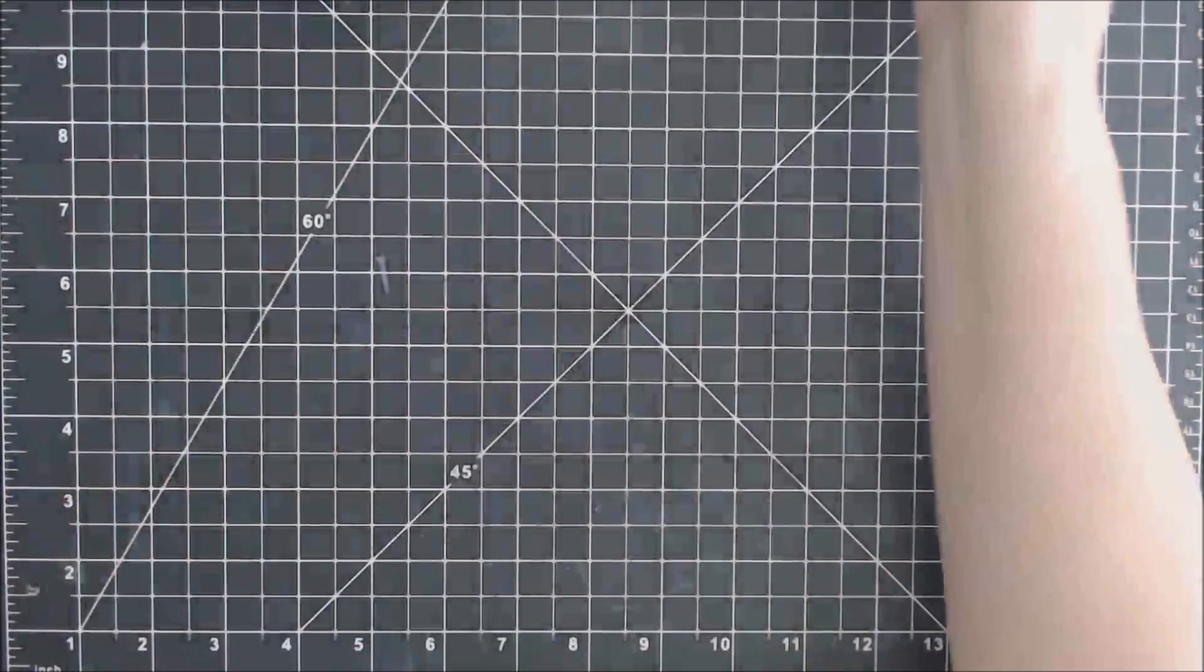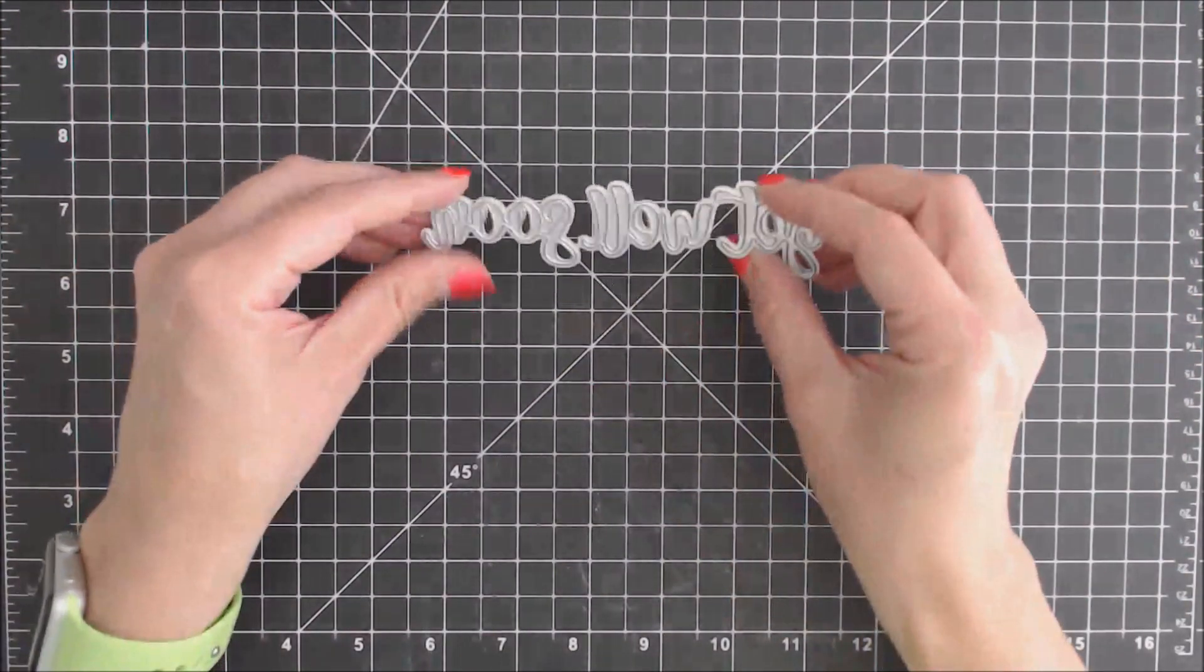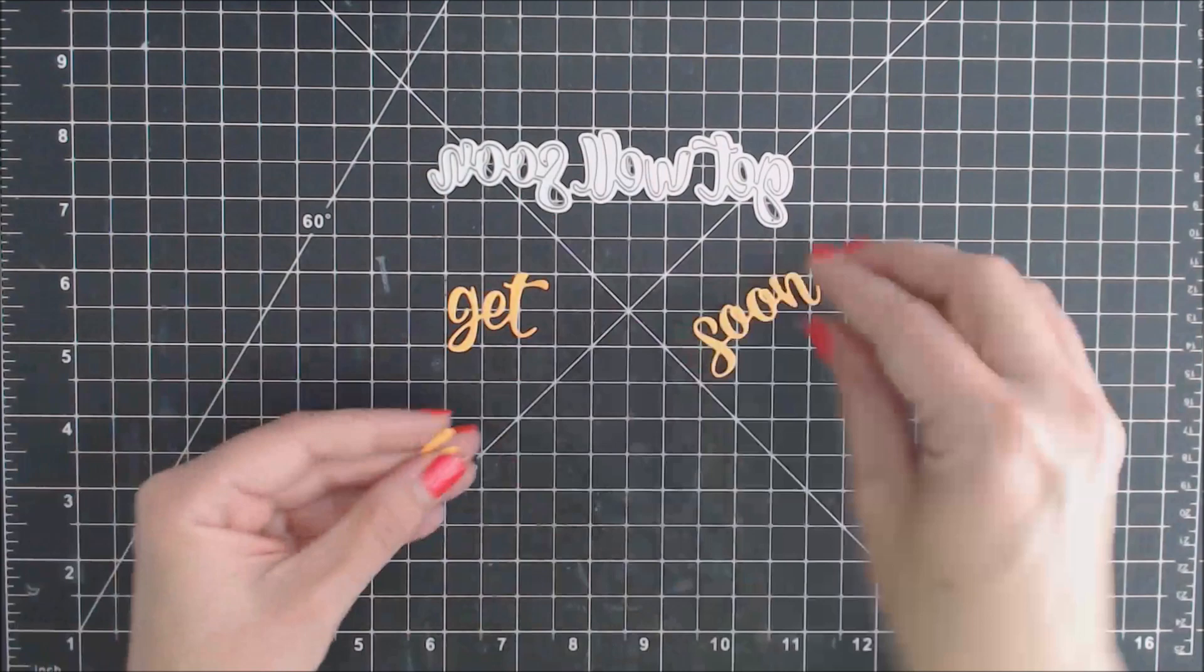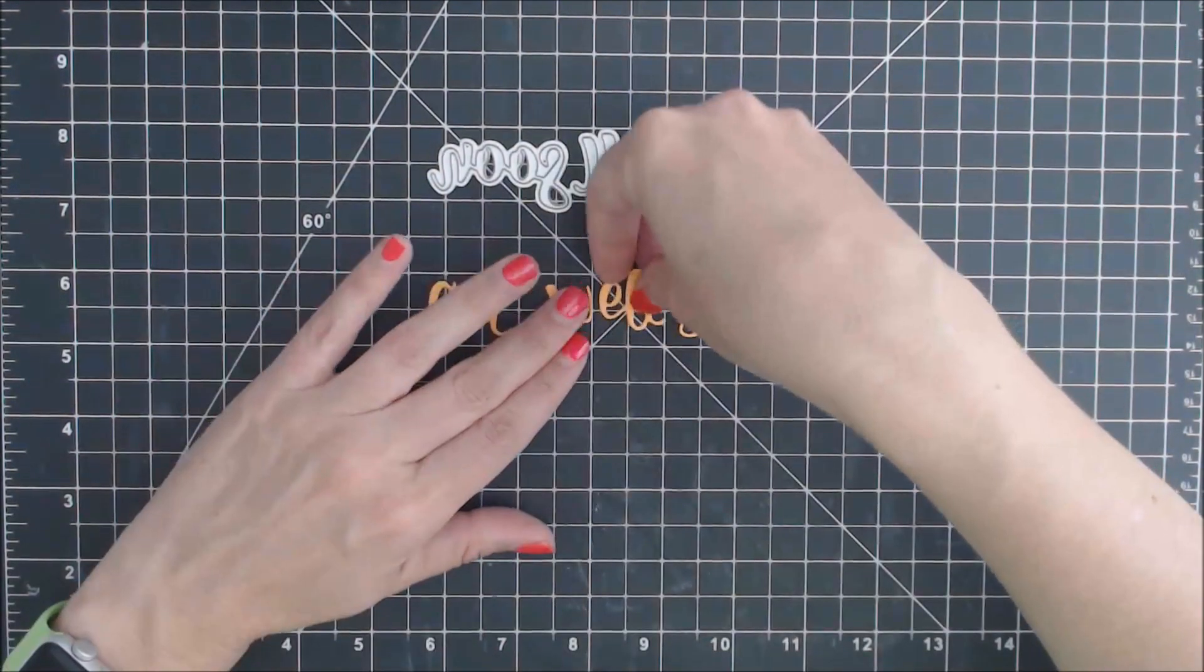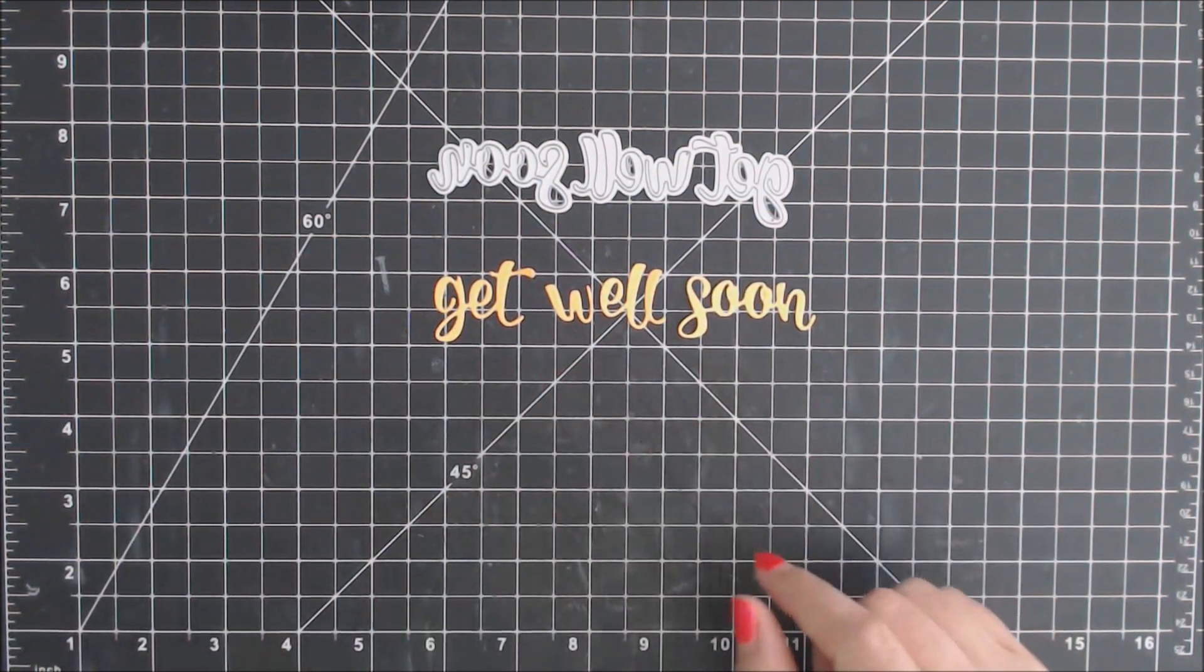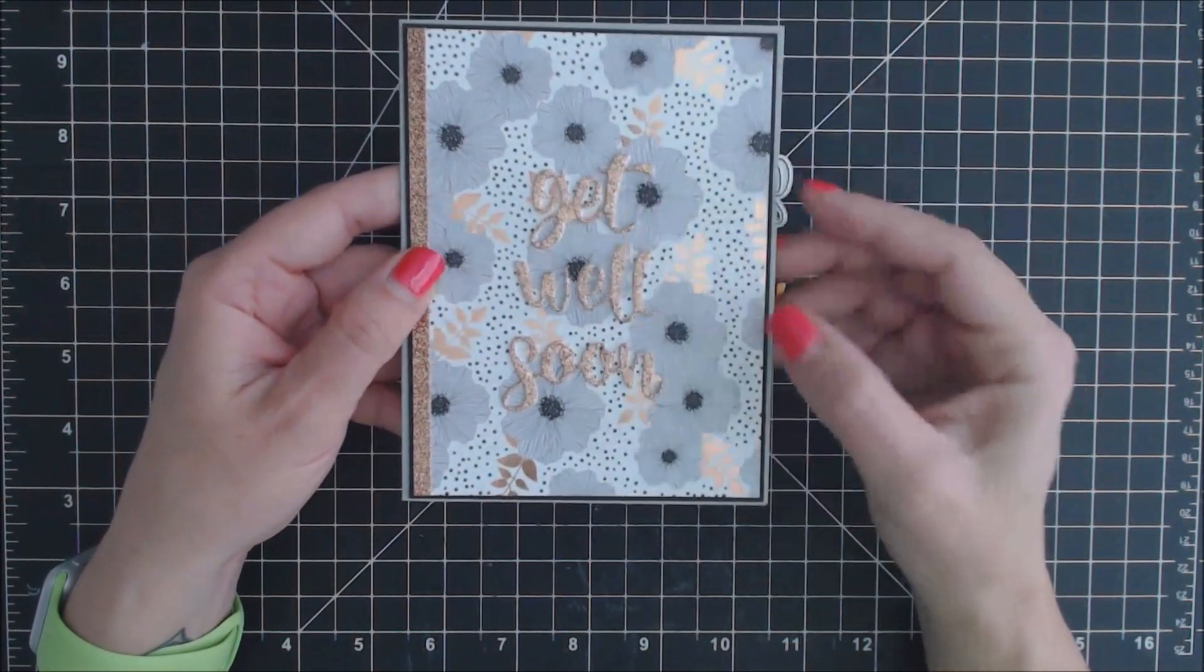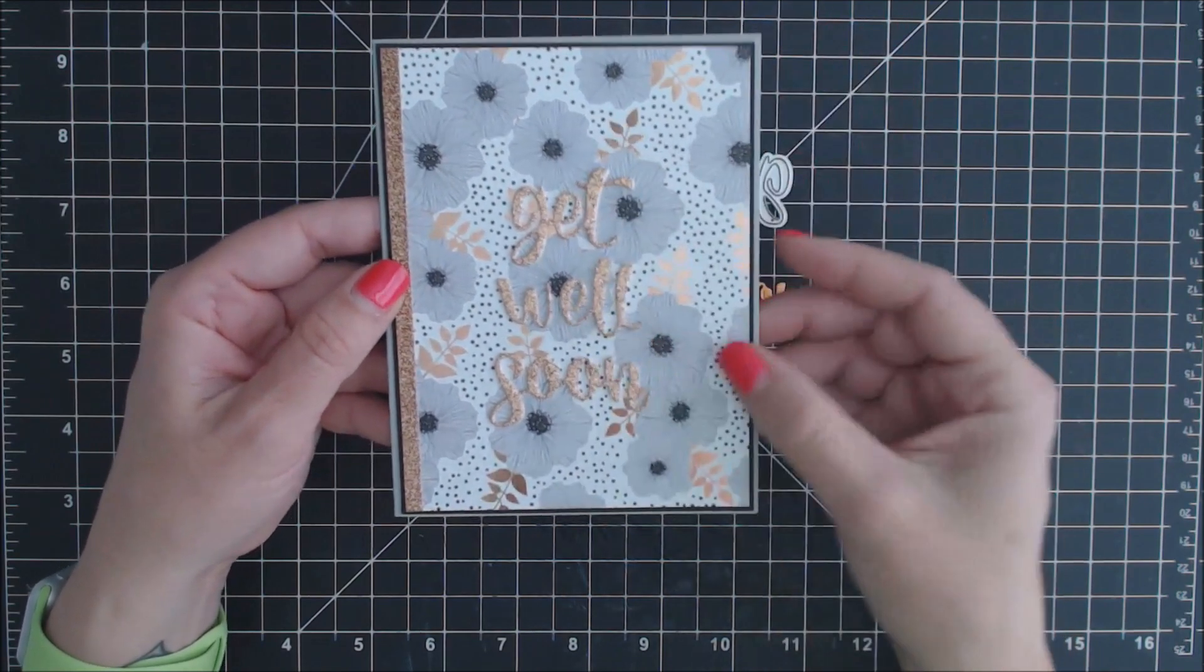I do have two other dies to show you. These were released in the middle of last month. The first one is Get Well Soon. Here it is. It cuts it in four different pieces and the approximate length is five inches long if you put it like this. For my example today, I put each word on a different line, cut it out with some glitter paper. Get Well Soon. Use some pattern paper. Again, another quick and easy card for this.